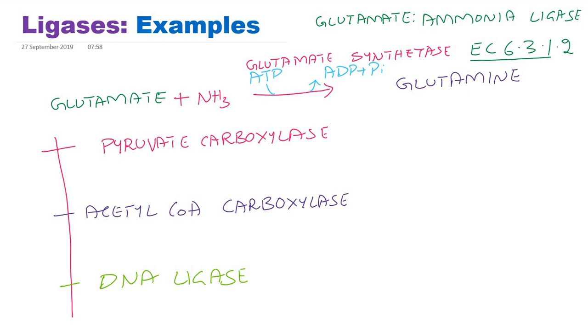Pyruvate carboxylase - the EC number is, of course they belong to class 6, EC 6.4.1.1. Acetyl-CoA carboxylase is EC 6.4.1.2. DNA ligase, the EC number is EC 6.5.1.1.